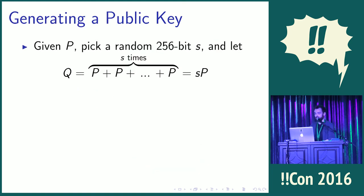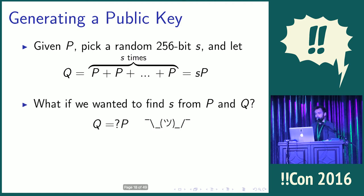To make a public key to start making a Bitcoin address, all we do is pick a random 256-bit number — and it's really important that it be random — then take a point P and add it to itself that number of times. We'll call the resulting point Q. There's a really fast way to compute that. But if you tried to go the other way — if I gave you Q and P and asked you to find S — that is a very difficult problem called the elliptic curve discrete log problem. Quantum computers can actually solve this quickly, but regular computers have no known fast solution.